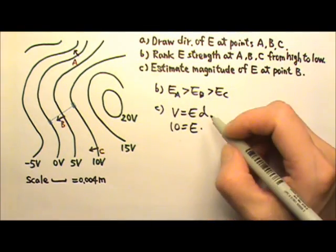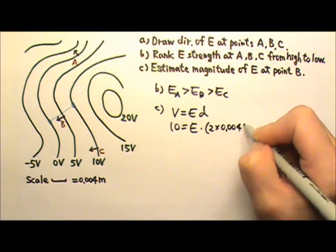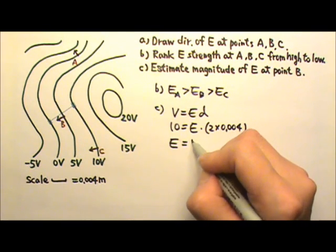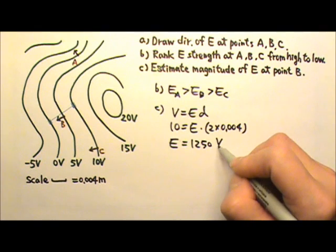So the distance D would be 2 times 0.004, and this will give me an electric field that is 1250, and the unit will be either volts per meter or newtons per coulomb.